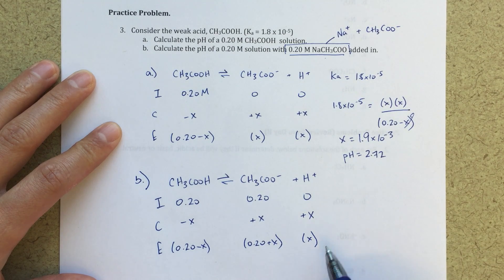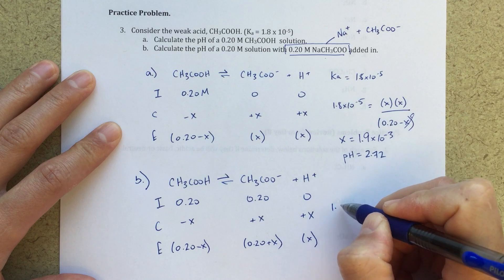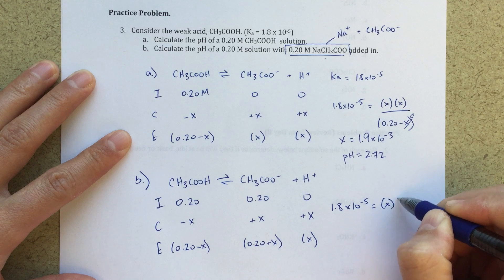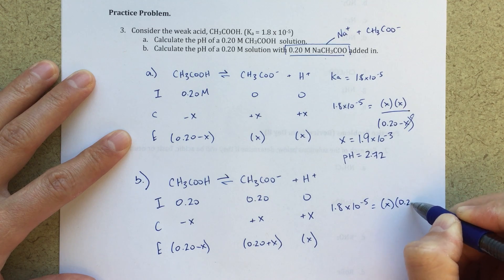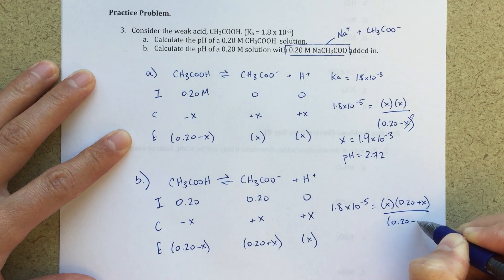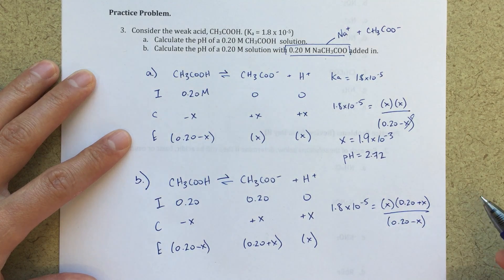I can finish up my ice table here. And now I can go ahead and solve again. For X, 1.8 times 10 to the minus 5th equals X times 0.20 plus X, and then 0.20 minus X.